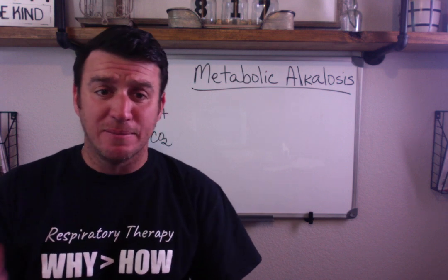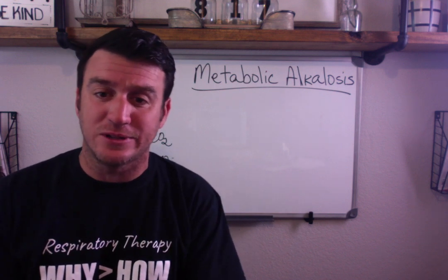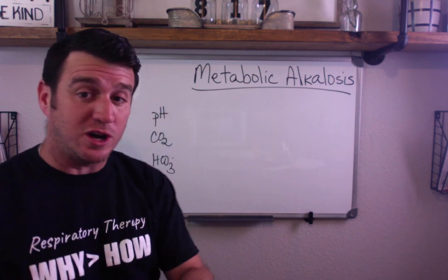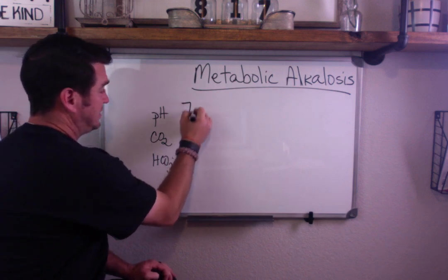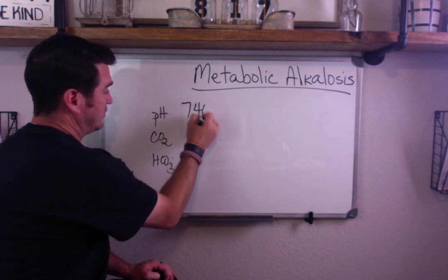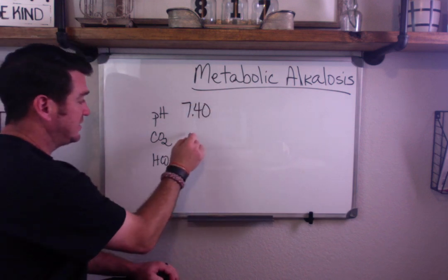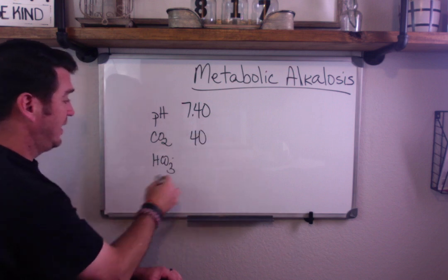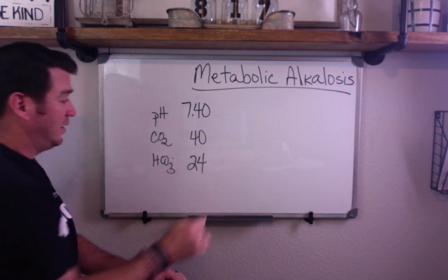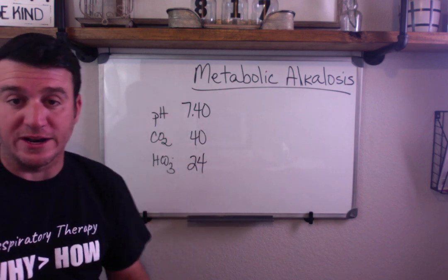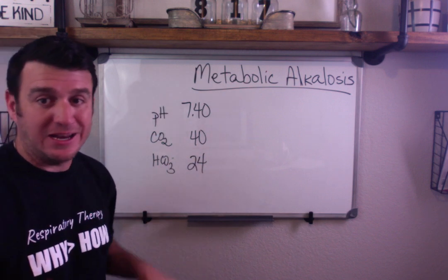Getting into metabolic alkalosis — just like the other videos, we're going to start off with absolute normal: pH 7.40, CO2 of 40, and a bicarb of 24. We know this to be normal.